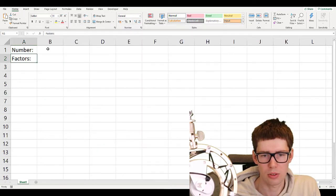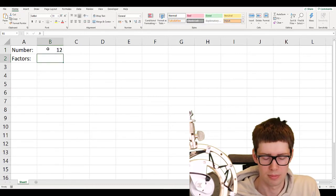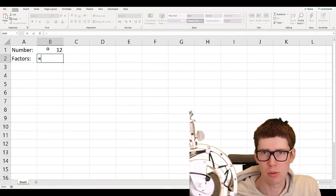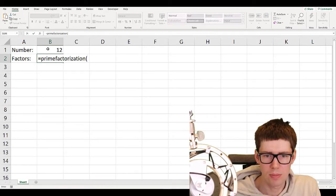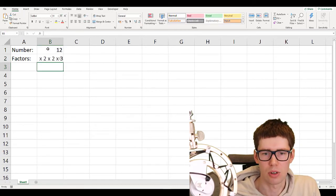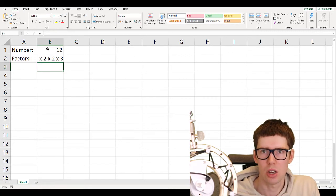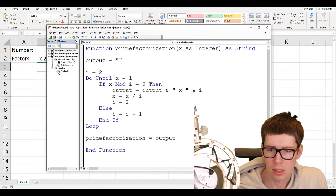So if you go to the spreadsheet there, we have a number and then the factors. So we could try for instance, 12. And we write in there, equal sign, and then the name of the function we just made, which was prime factorization. And the input is going to be cell B1. So let's see if it works. And it does. Almost. We get the correct factors 2, 2, and 3. But I don't want the x to be there in the beginning. So I'm going to go back to the VBA editor.